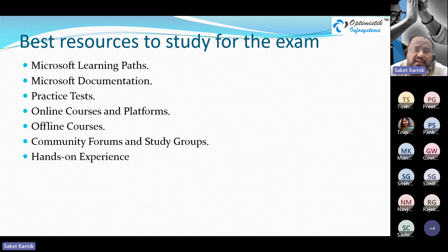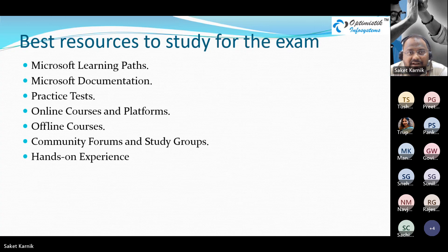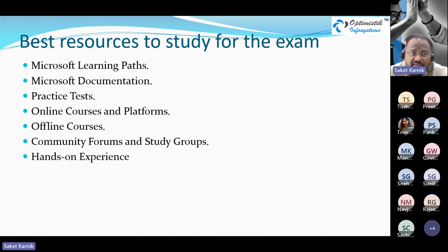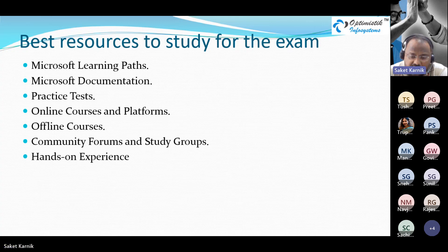As a summary of study resources: Microsoft documentation and Microsoft Learn are the first priority. Online courses are available on platforms like Udemy and Pluralsight. Offline courses like those from Optimistic Infosystems are available. Practice tests — both online and from organizations — are important. Community forums and study groups are helpful. Hands-on experience is an absolute must — you cannot avoid it.